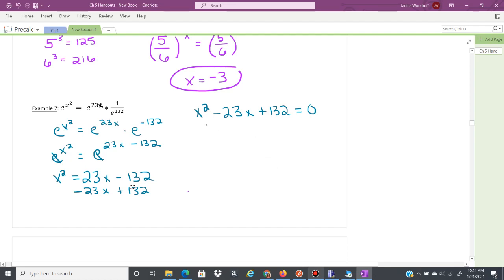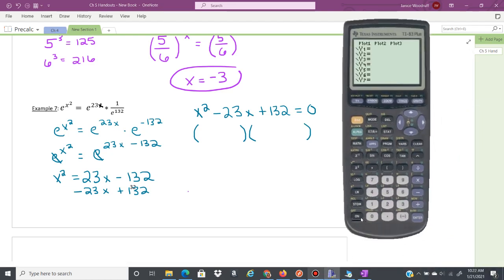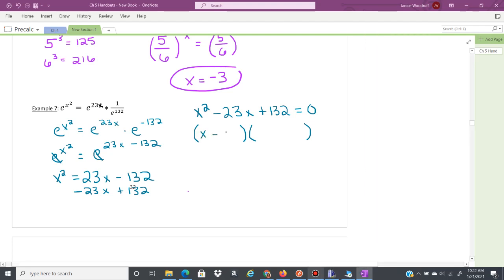So this is going to become x squared minus 23x plus 132 equals 0. Then I'm going to go through and solve this. I can factor to solve here. Multiplies to 132 and combines to negative 23. I believe that is 12 and 11. So we're going to have both of them negative here. So x minus 12, x minus 11. Negative 12 times negative 11, 132. Negative 12 minus 11, negative 23.